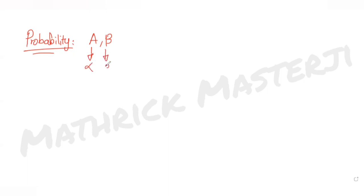Today's question is from the topic of probability. Two dice A and B are rolled, each with outcomes from one to six, giving 36 total outcomes. The numbers obtained on A and B are called alpha and beta respectively, where alpha and beta each range from one to six.